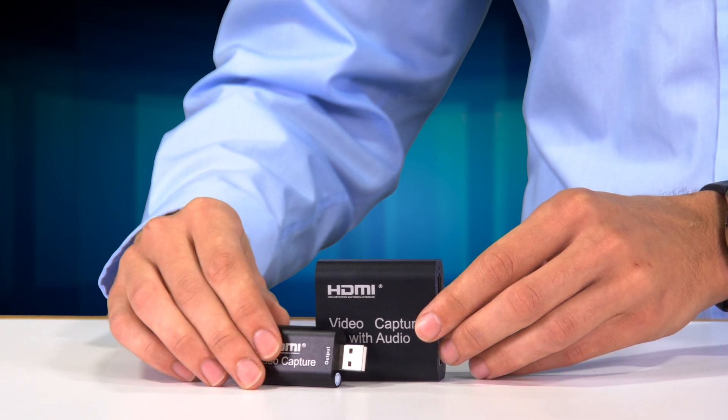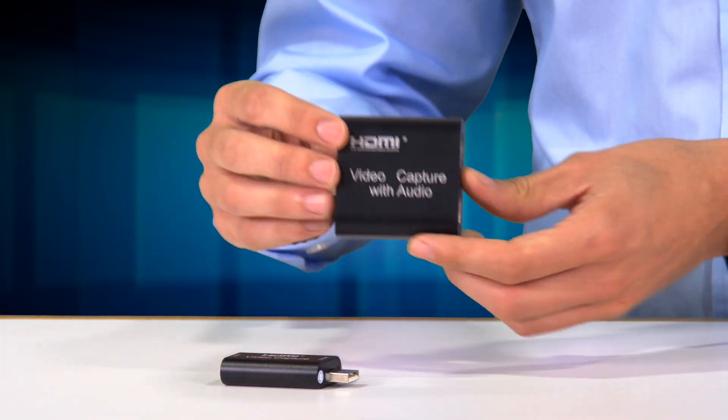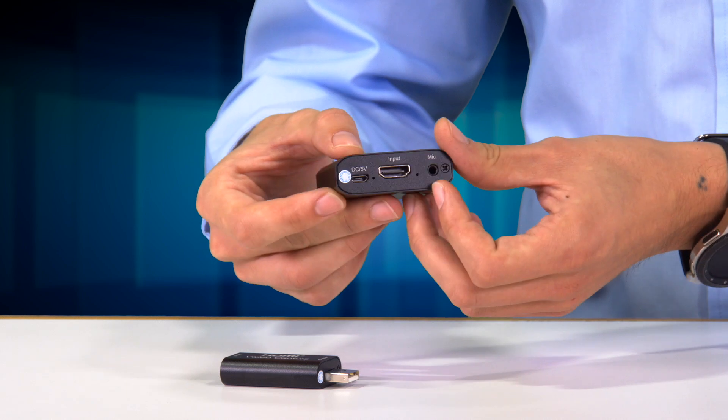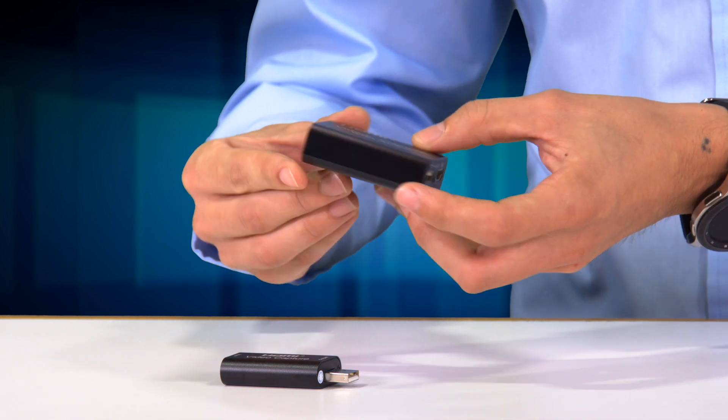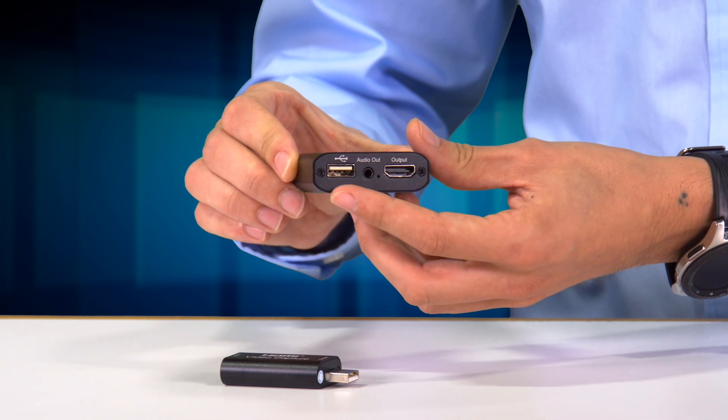The Cap 2 has all the features of Cap 1 but also gives you an easy way to embed external audio sources and features an HDMI looping output as well as a 3.5 millimeter headphone output for monitoring.